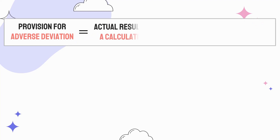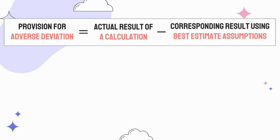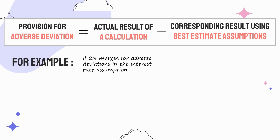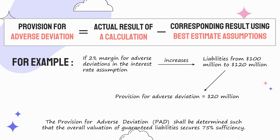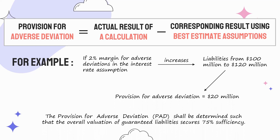The provision for adverse deviation is defined as the difference between the actual result of a calculation and the corresponding result using best estimate assumptions — the dollar amount of increase that results from the application of the margin for adverse deviations. For example, if the 2% margin for adverse deviations in the interest rate assumption increases liabilities from $100 million to $120 million, then the provision for adverse deviations is $20 million. The provision for adverse deviation shall be determined such that the overall valuation of guaranteed liabilities secures 75% sufficiency.